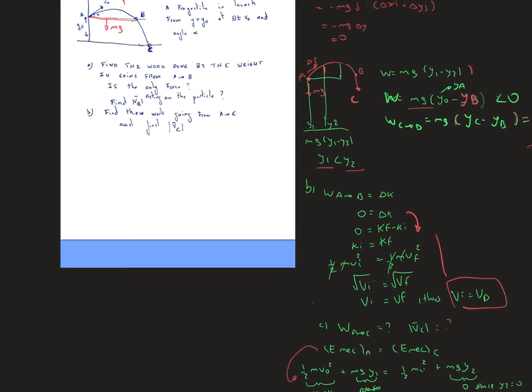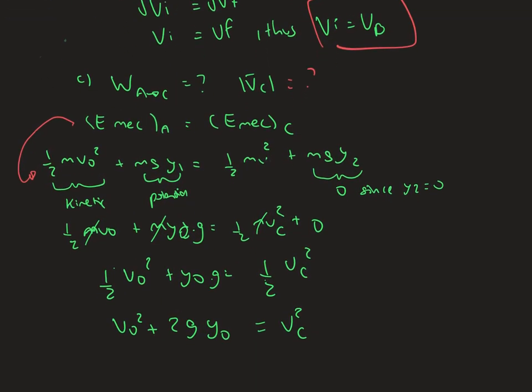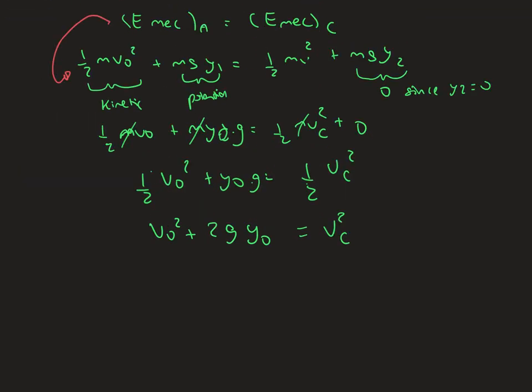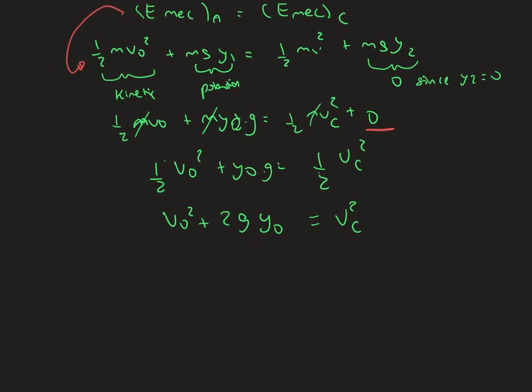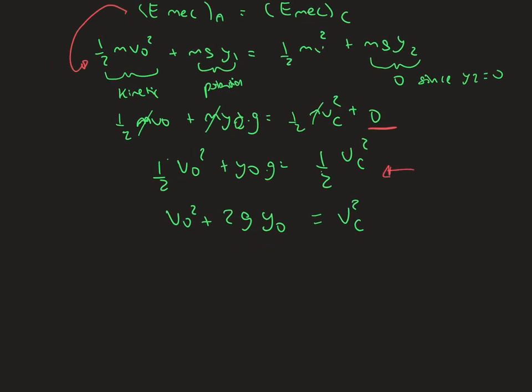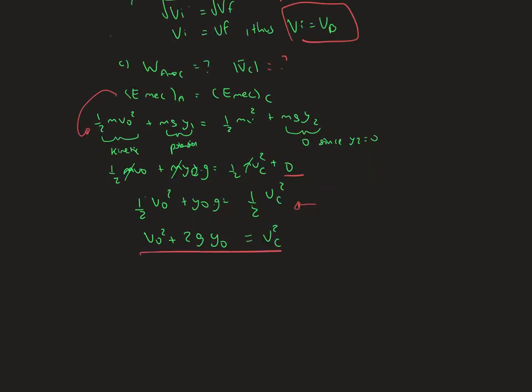We also know that the final velocity is going to be equal to 0 based on the given information above. Then we continue doing the algebra. We cancel out the M's, and we already know this is 0, so we don't need to write it again. Then we have the following, so we can solve for vC squared, and this is our final answer.